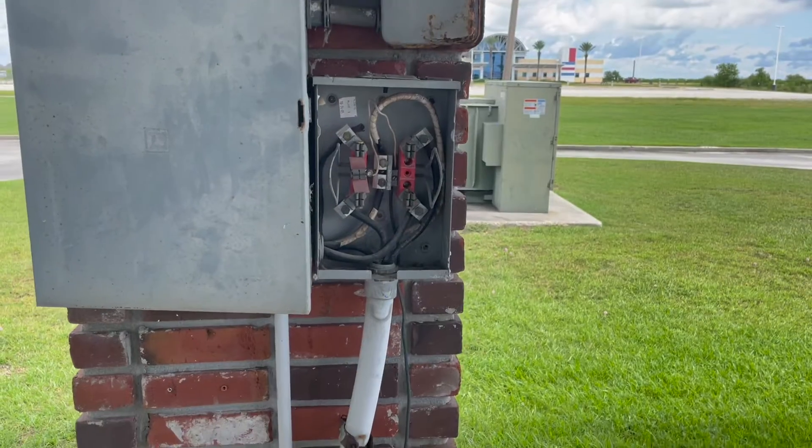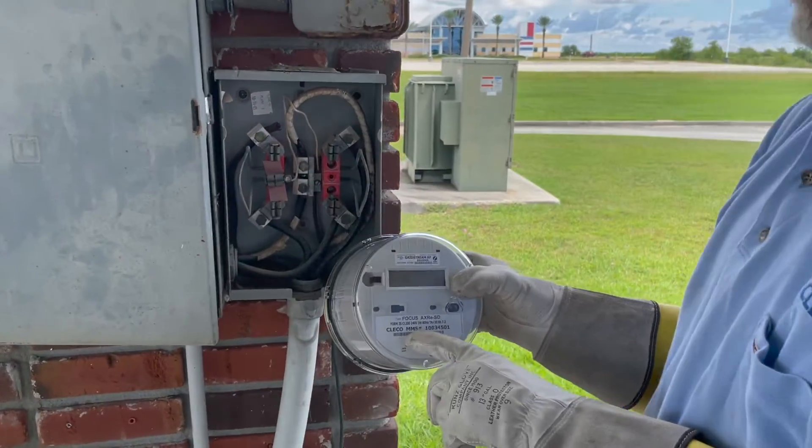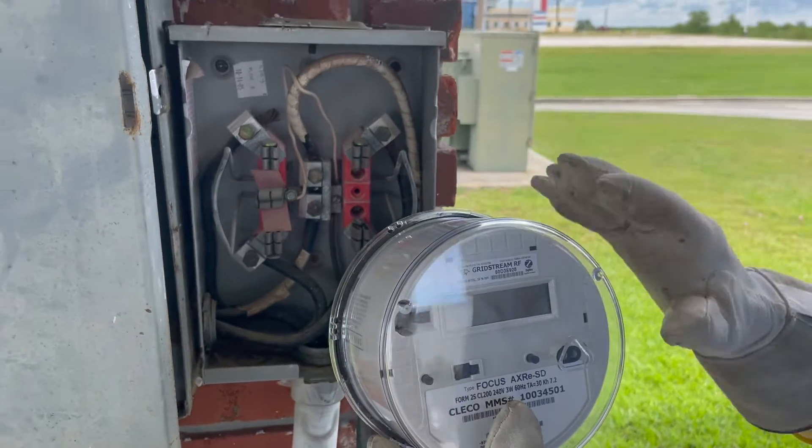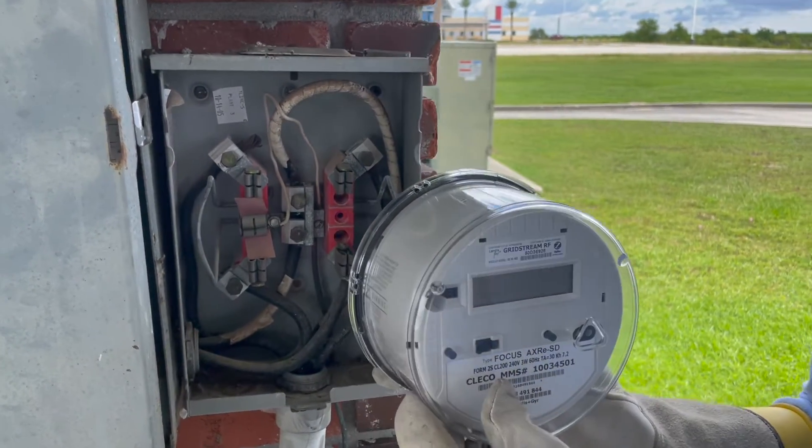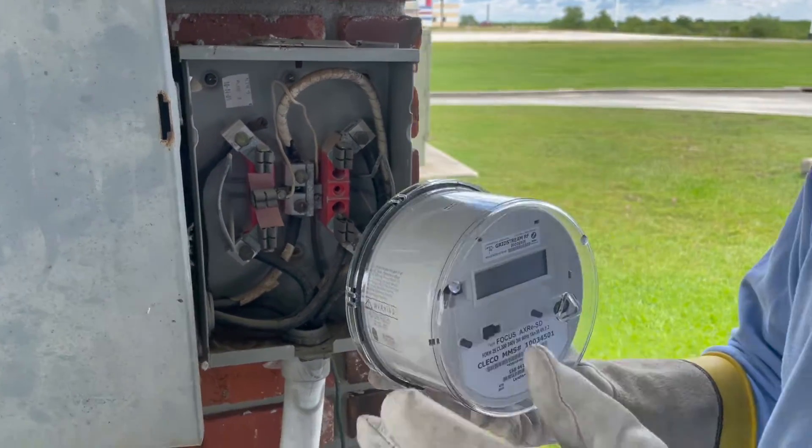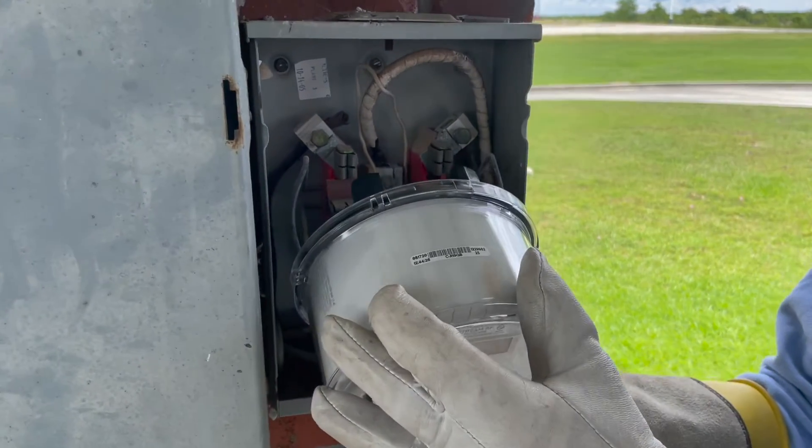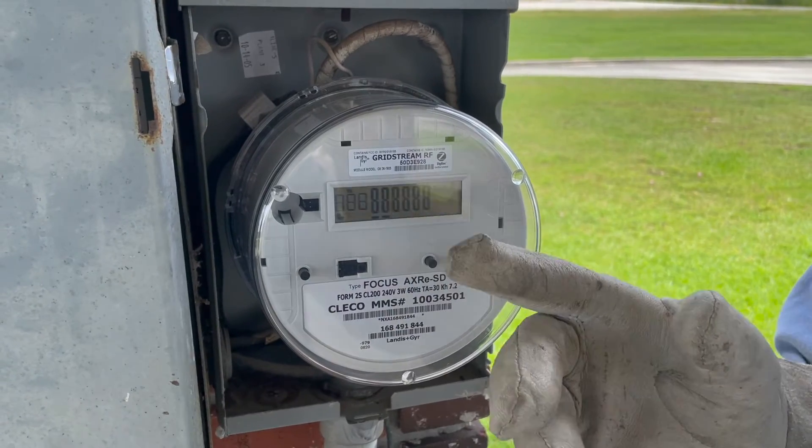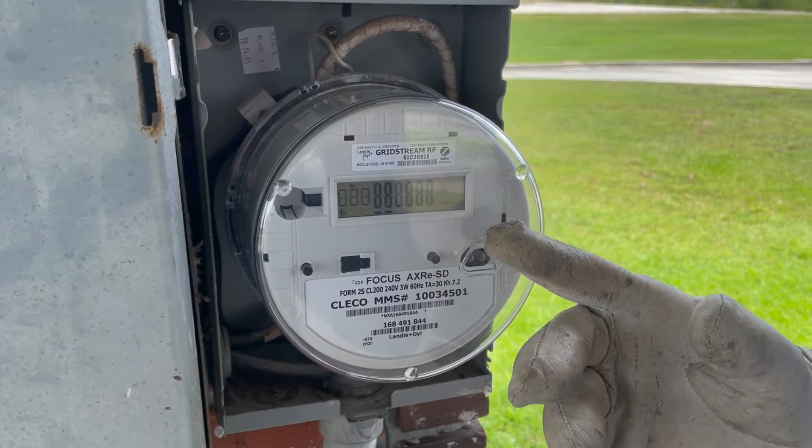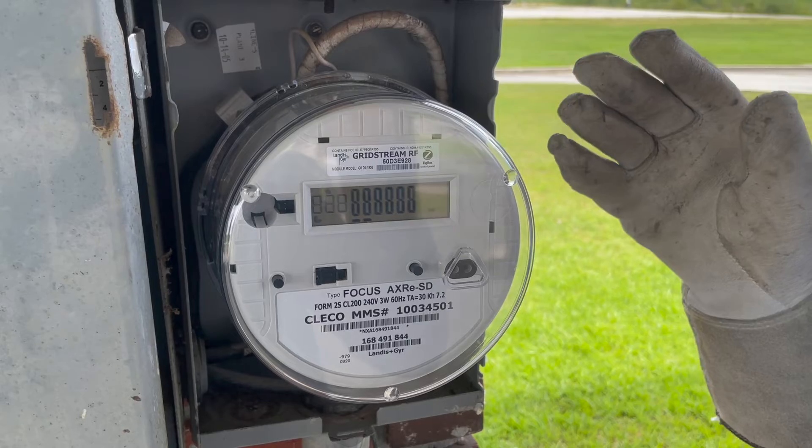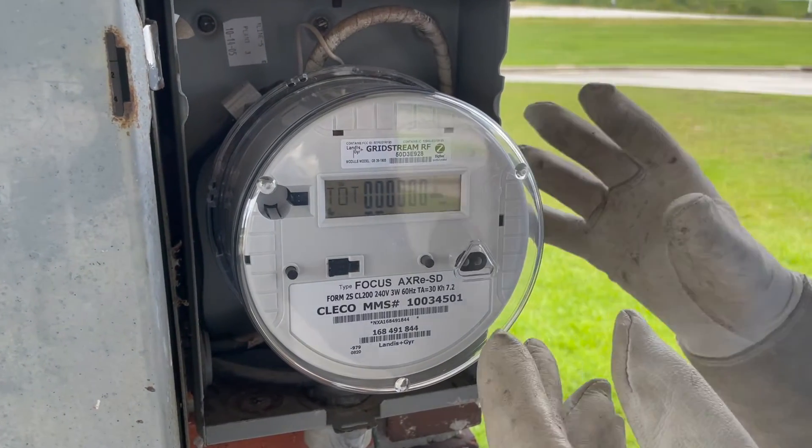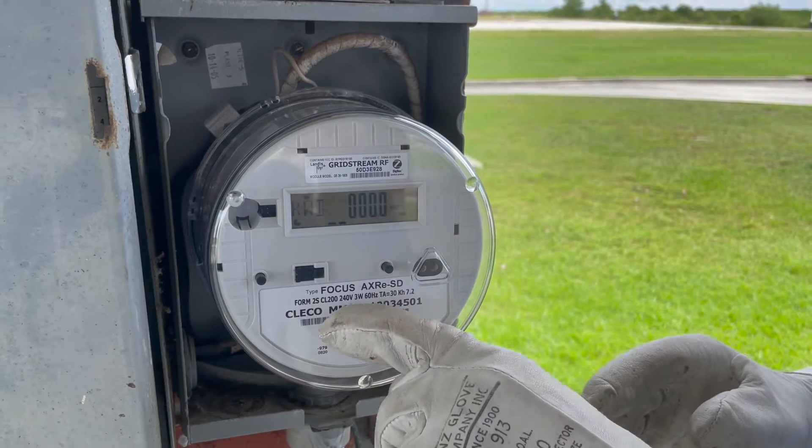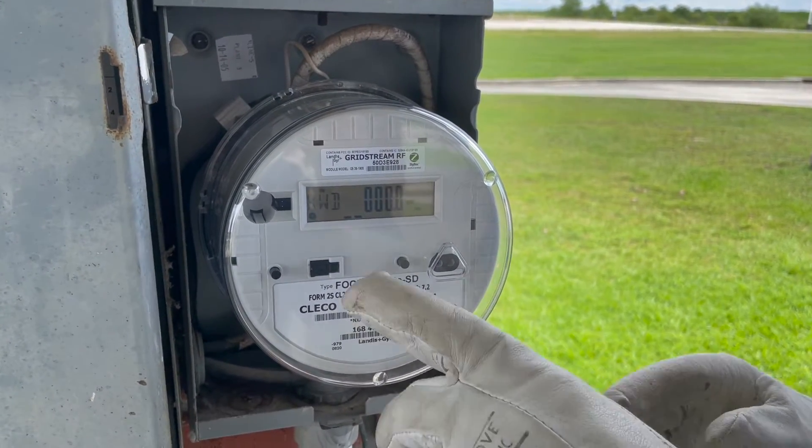What we have a problem with is servicemen come in here and they put in a form 2S, which is a 240 volt meter. These meters, when plugged into this situation, they will light up. So the meter lights up, the serviceman thinks he did everything right, but he did not check the voltages correctly. This is a Y network 120/208 instead of a 240 volt delta service.